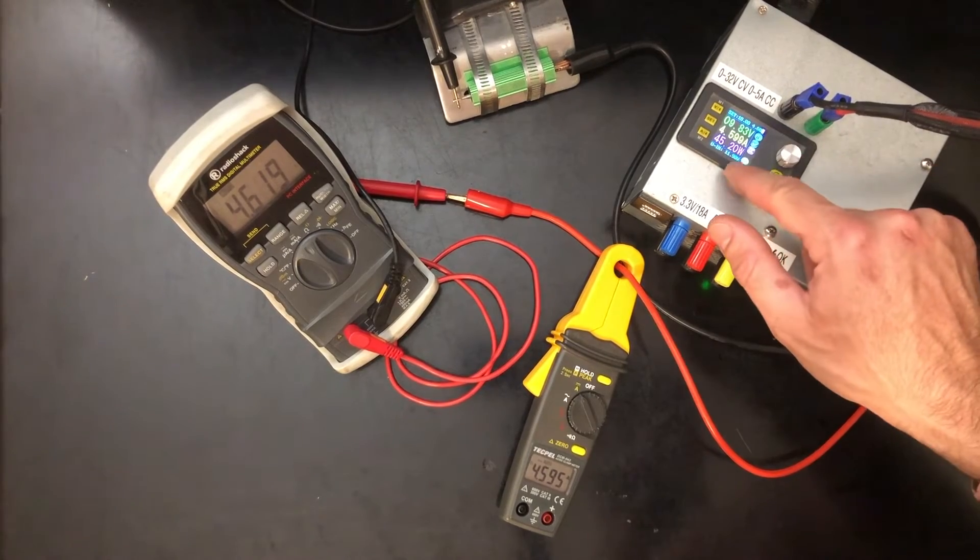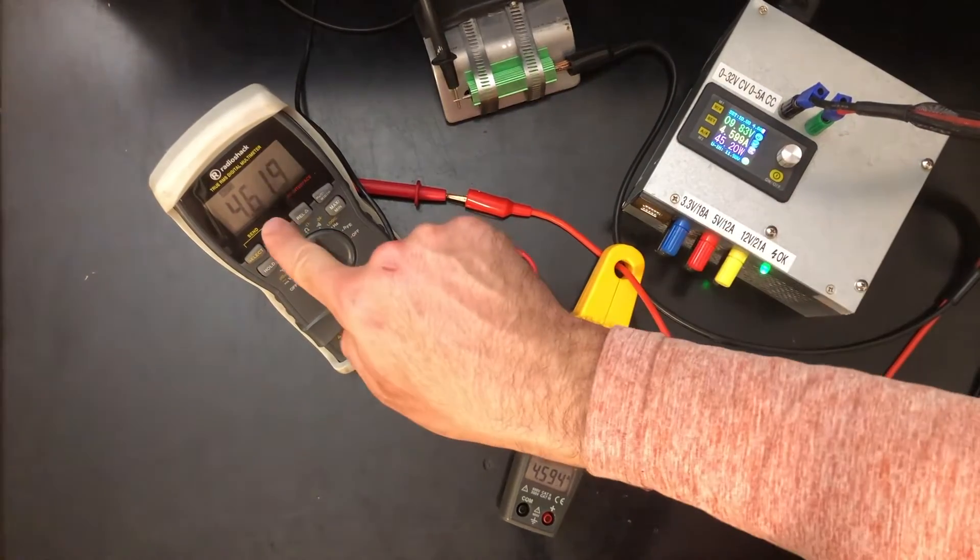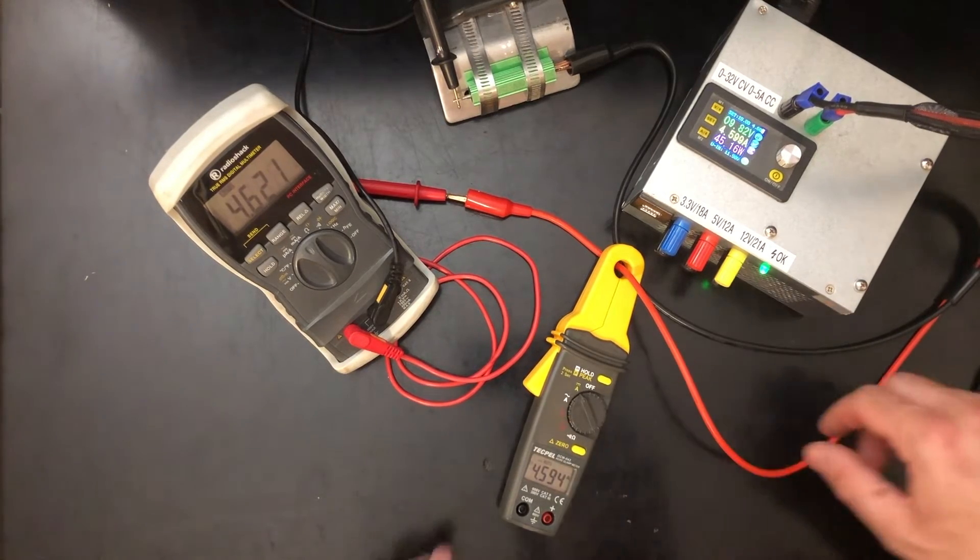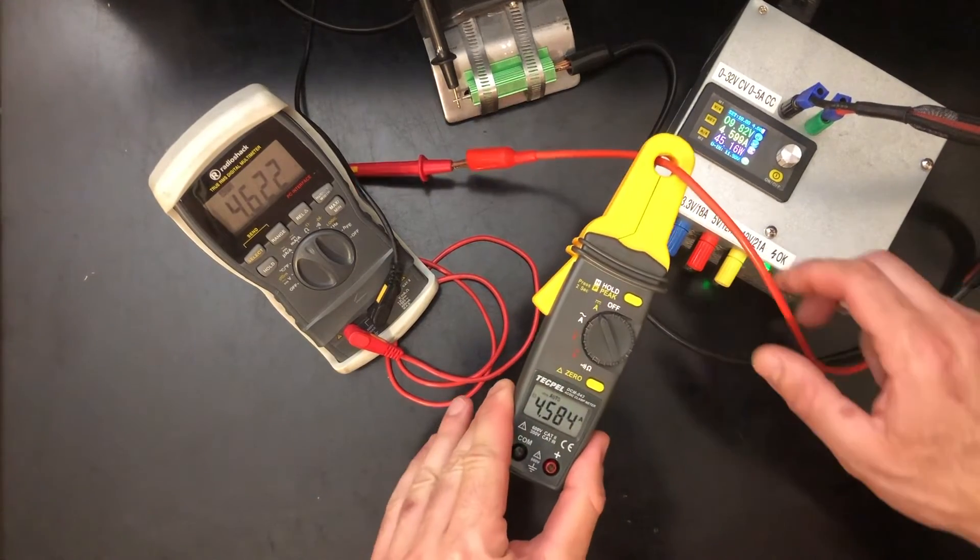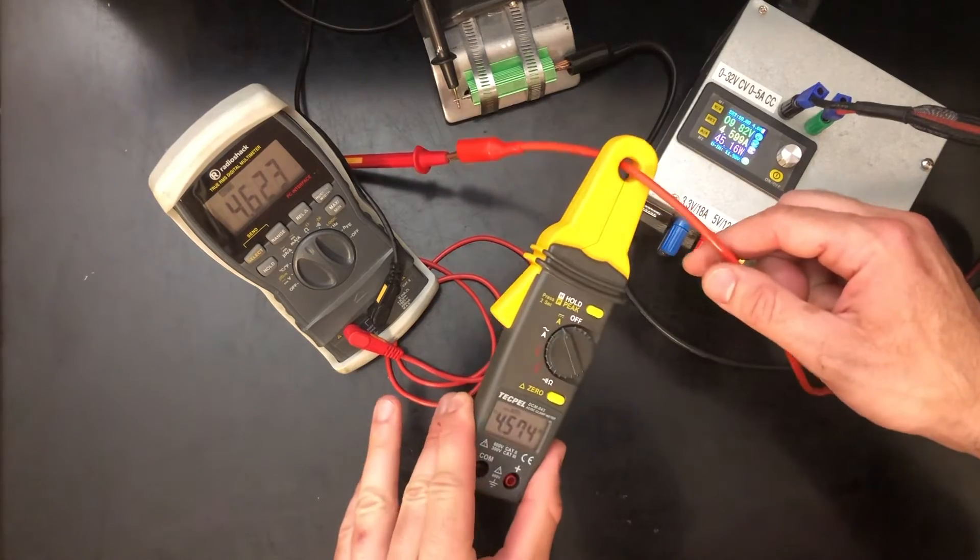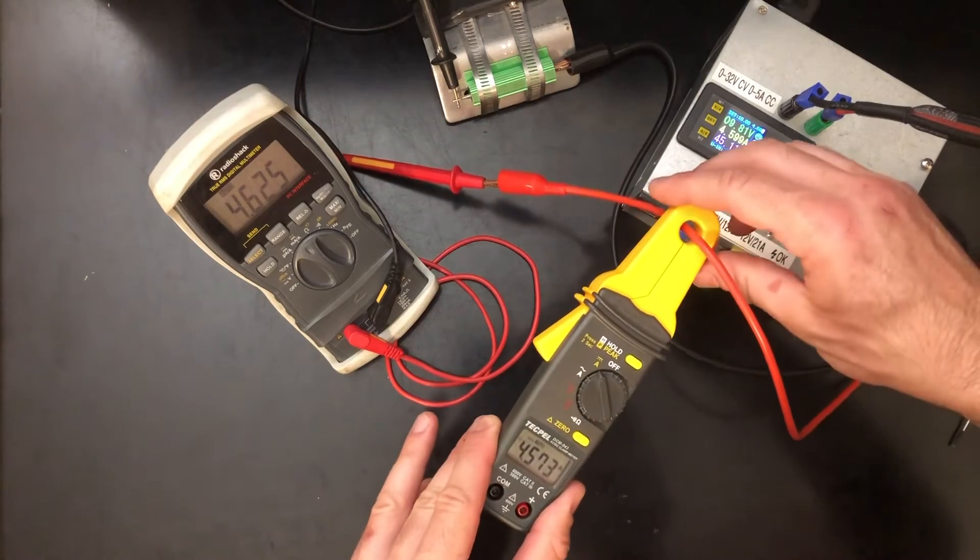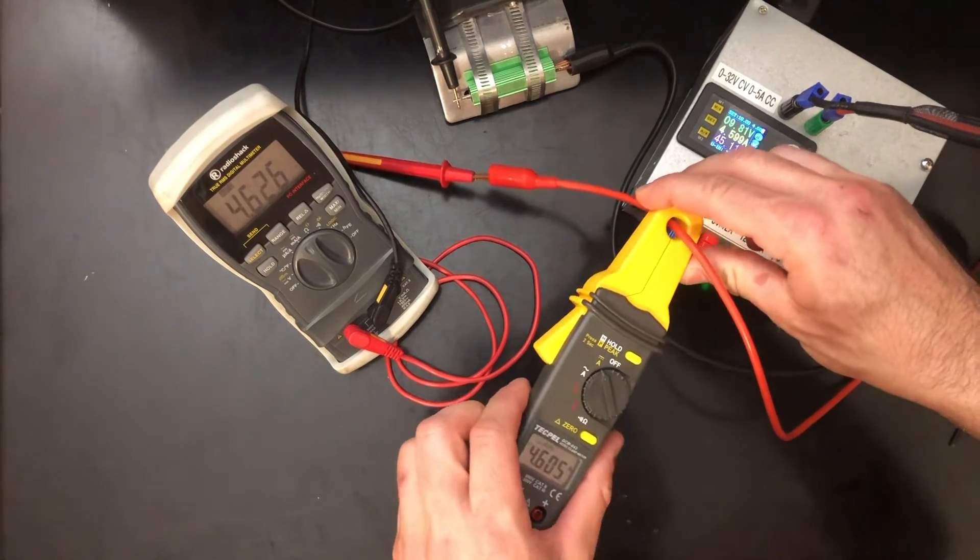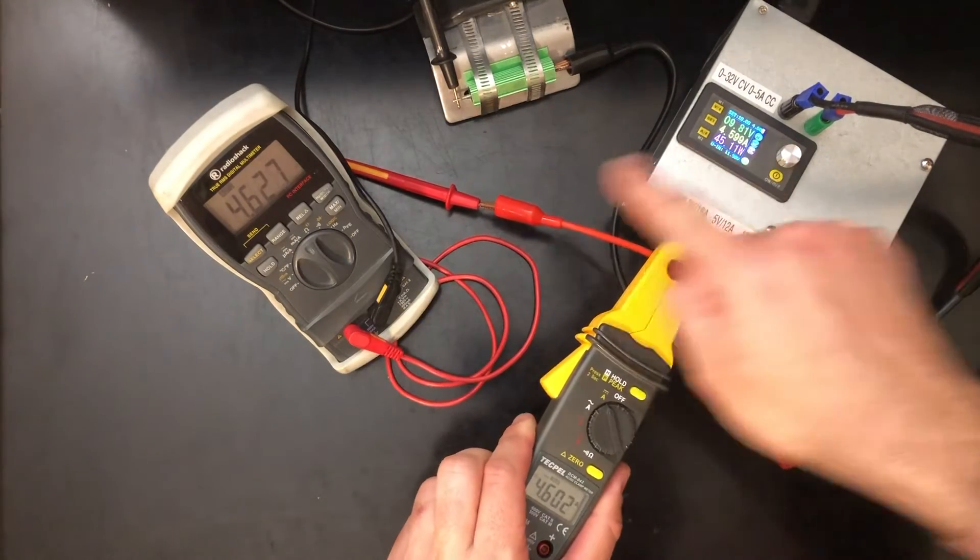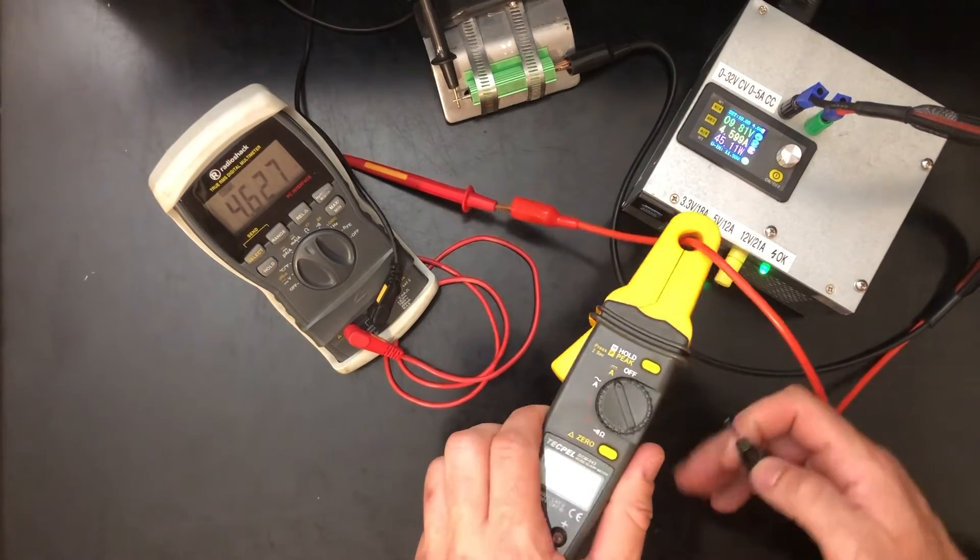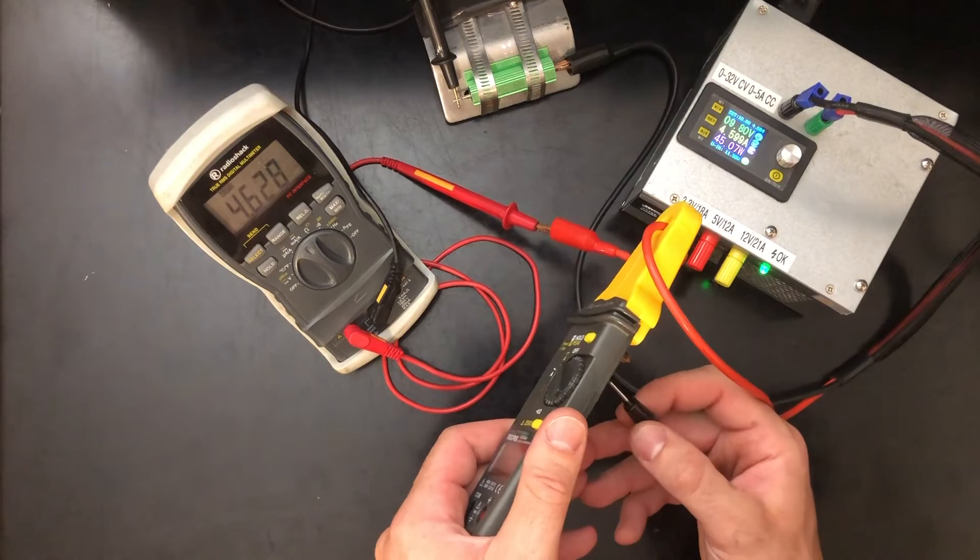So 4.6 amps according to this meter, 4.619 or 4.62 on this meter. And you can see we're at 4.57 on the clamp meter. So I think we can do a little bit better than that. Using these two references, I'm going to say that's right around 4.61 if I had to say in between the two. So I'll just give it one little additional tweak.